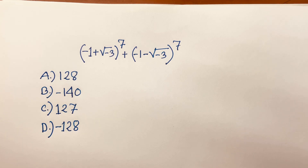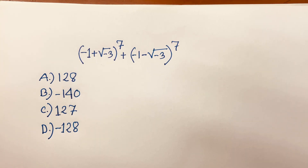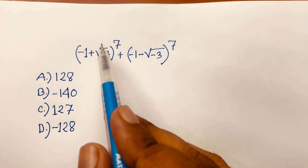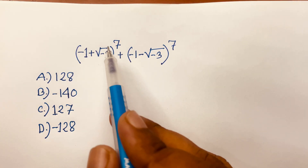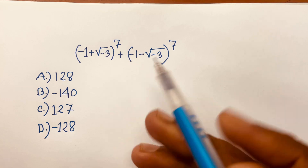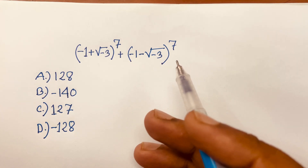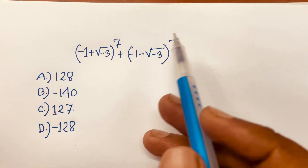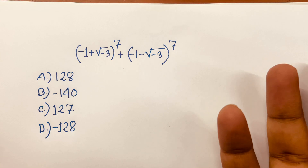Hello everyone. In this video, I solve this math question. It is a complex number question: (-1 + √(-3))^7 + (-1 - √(-3))^7 is equal to what?